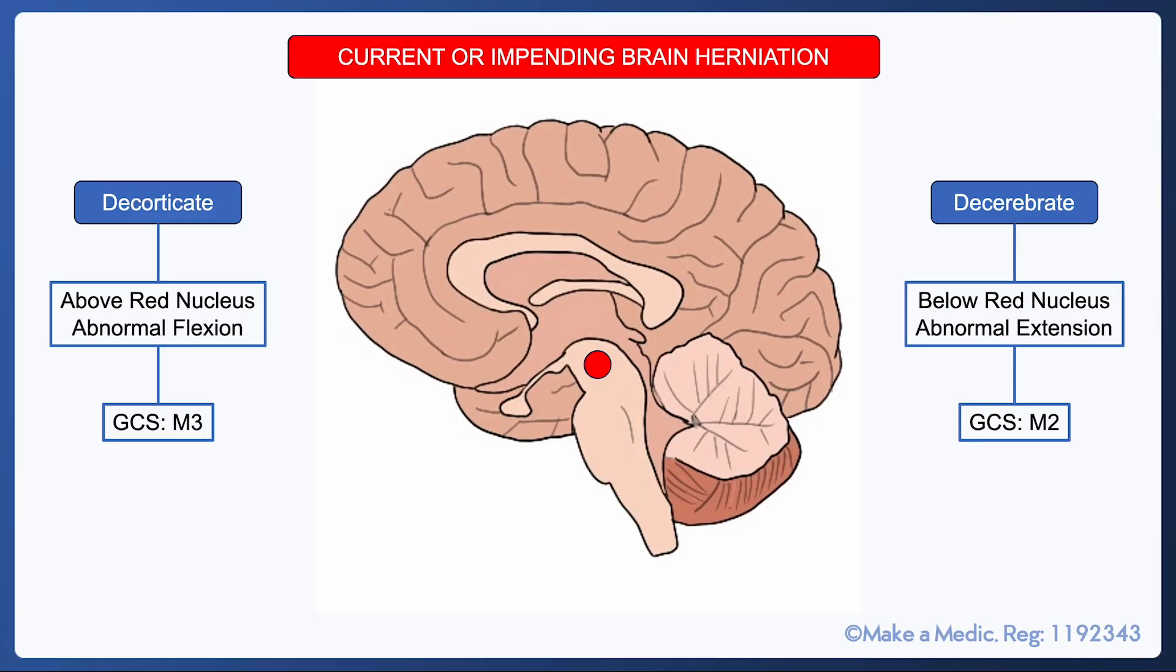Though there are some neuroanatomical differences in terms of their causes, the main point to remember is that both forms of abnormal posturing are suggestive of significant brain injury, more specifically current or impending brain herniation.